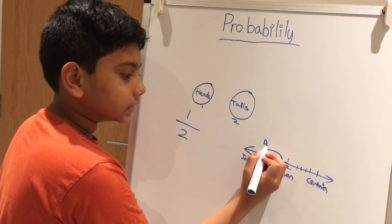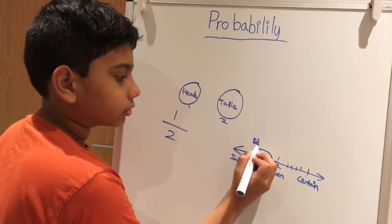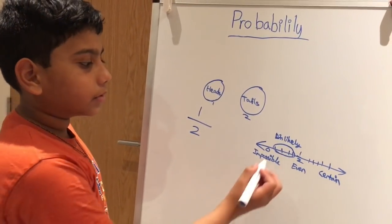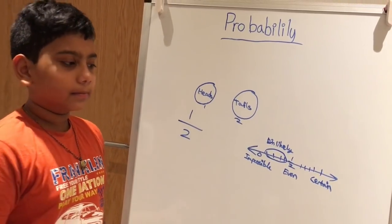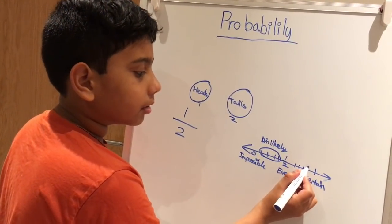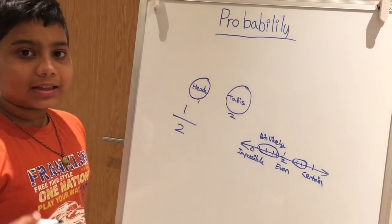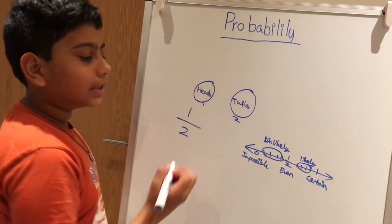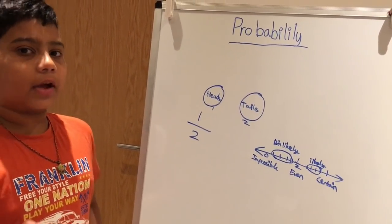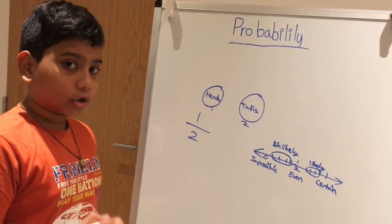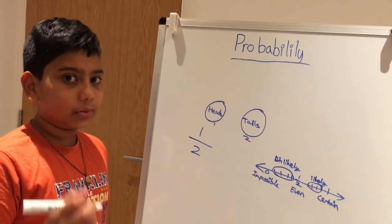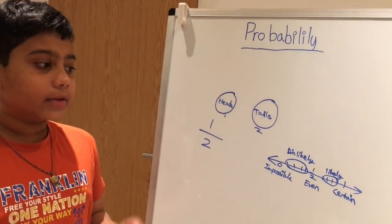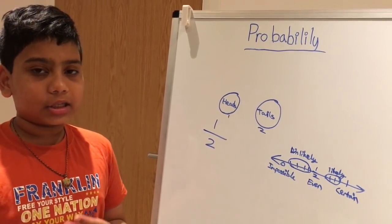You might be thinking — what do we call the four lines between zero and one-half? Anything in those lines we call unlikely. And what do we call the probability in the four lines between one-half and one? We call it likely. Unlikely means something has a less chance of happening but it's not impossible and not an even chance. Likely means it doesn't have a certain chance but it has a likely chance to happen.